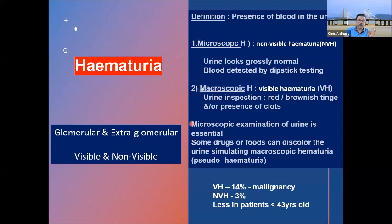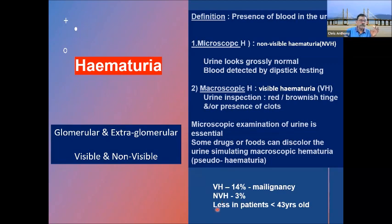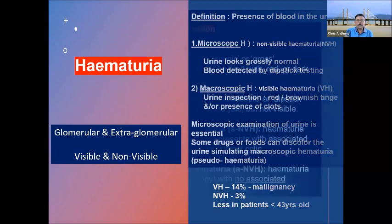Examination of the urine is always essential to diagnose hematuria. Some drugs can discolor the urine simulating hematuria — this is known as pseudo hematuria. Regarding importance: visible hematuria has a 14% chance of being due to underlying malignancy, while non-visible hematuria is about 3%. The incidence of cancer reduces with age — below 40 there is much less risk. Another classification is glomerular versus extra-glomerular hematuria.